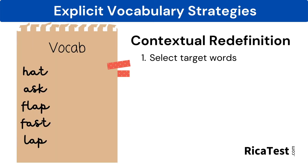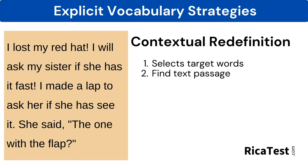In contextual redefinition, first the teacher selects the target vocabulary words to be taught based on frequency, utility, and level of knowledge about that topic. Then the teacher finds or creates a text passage which includes the target words. Note that these two first steps are completed in preparation and not while the teacher is with the students.